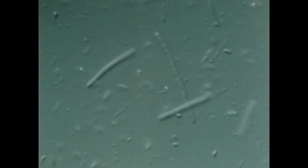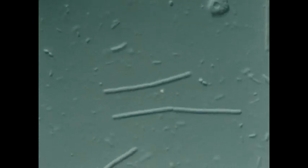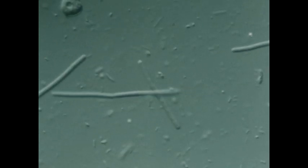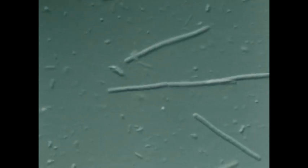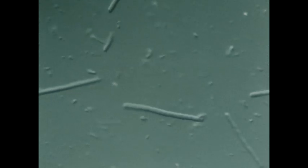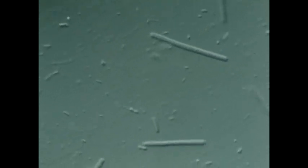Bacteria are prokaryotic cells, cells without nuclei. They have a cell wall, but few organelles of the kind found in cells with nuclei, eukaryotic cells. It now appears that prokaryotic cells like these were the major form of life for around two billion years.